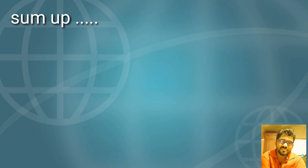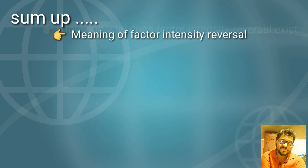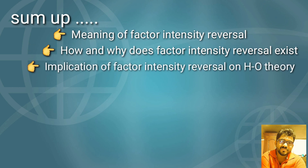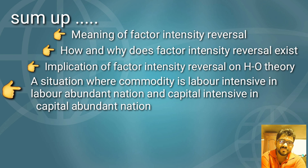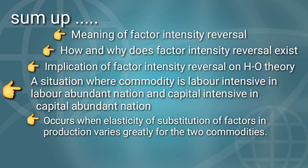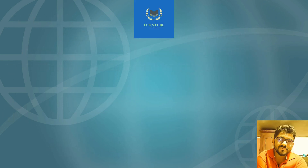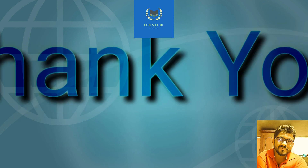To sum up the entire discussion on factor intensity reversal: we have understood the meaning of factor intensity reversal, how and why it exists, and its implications for the HO theorem. In brief, factor intensity reversal refers to the situation where a commodity is labor intensive in the labor-abundant nation and capital intensive in the capital-abundant nation. This may occur when the elasticity of substitution of factors in production differs greatly between the two commodities. With factor intensity reversal, the HO theorem breaks down. That is all about factor intensity reversal and its related aspects.